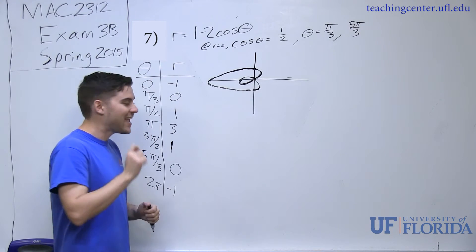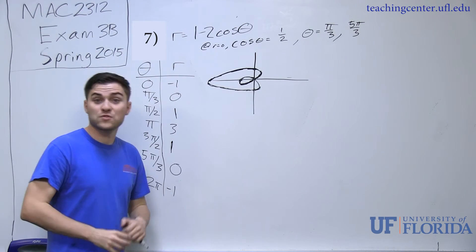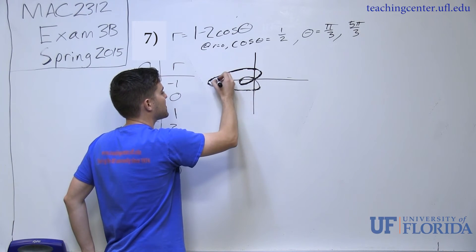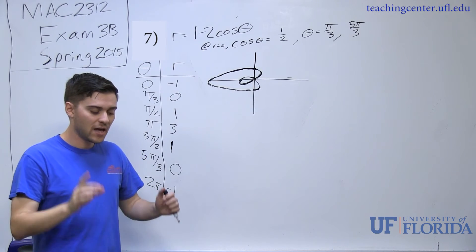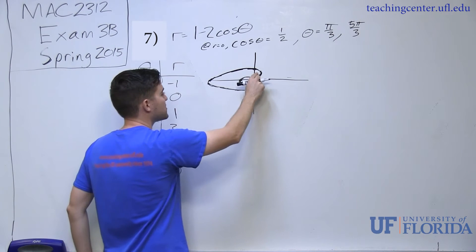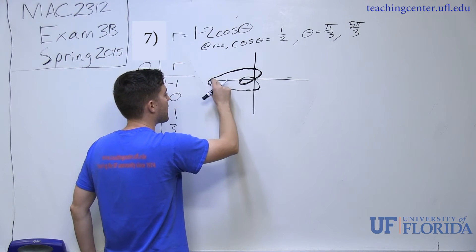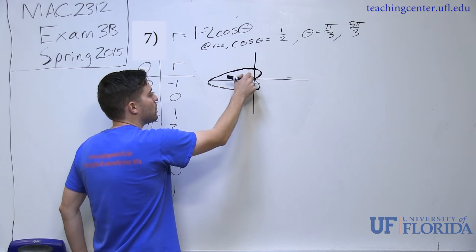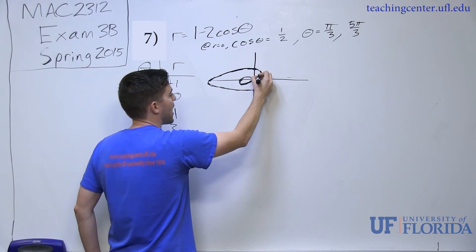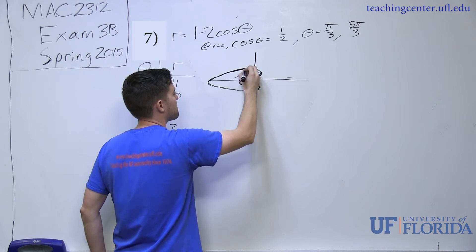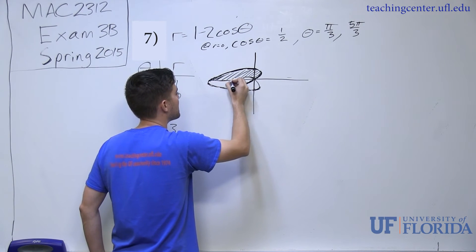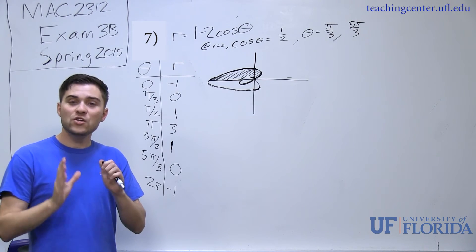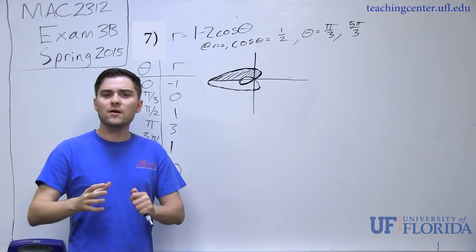The problem wants the area inside the larger loop and outside the smaller loop. Now that we have the sketch, we can see there's a smaller loop and a bigger loop. We want all the area inside the larger loop, but with the restriction to the first and second quadrants — the two upper quadrants. So anything below the horizontal axis is excluded, and we want just the area of the larger loop in the upper half.